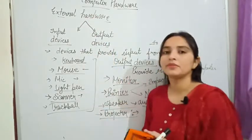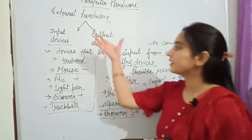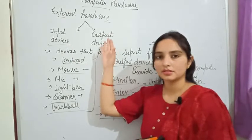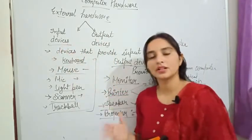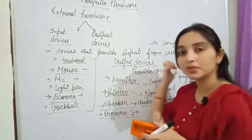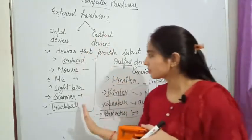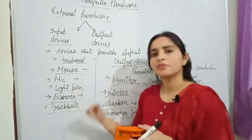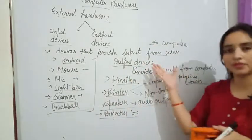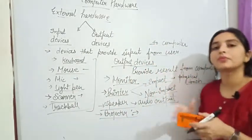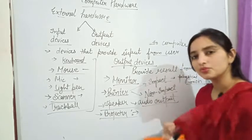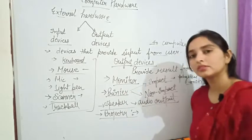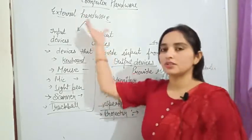Today we learned about various external hardware devices, divided into two broad categories: input devices and output devices. Input devices — keyboard, mouse, MIC, light pen, camera, trackball, joystick, and many more — provide input to the computer system. Output devices — monitor, printer, speaker, and projector — provide results to the user. This was all about external hardware. Thank you.